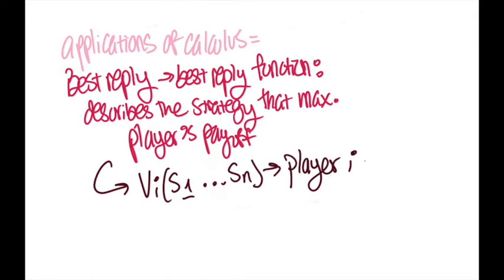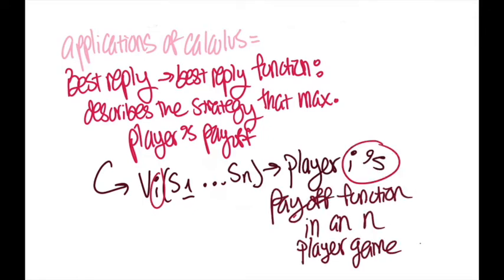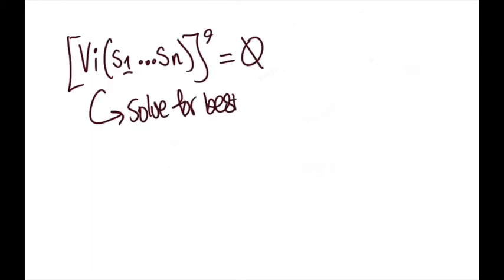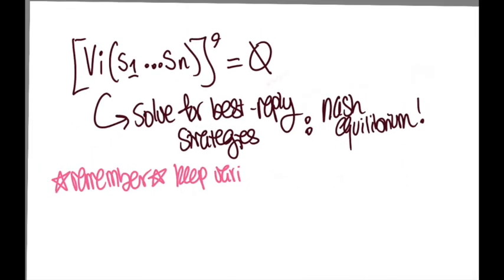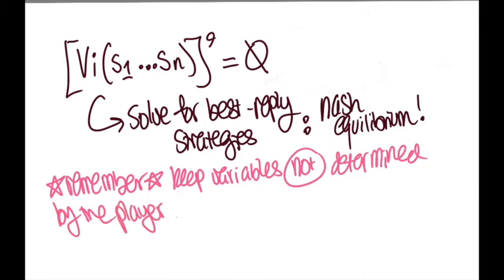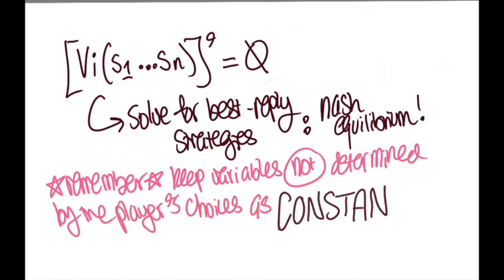A formal definition can be seen like this, which represents a player i's payoff function in an n-player game. By taking the derivative of our payoff function and setting the equation equal to zero, we can solve for the best reply strategy that not only maximizes our payoffs but also allows us to be in Nash Equilibrium. It's important to note that while we are taking the derivatives of a player's payoff functions, we treat the variables that are not determined by the player's respective choices as constants, taking derivatives of only the variables the player can control.